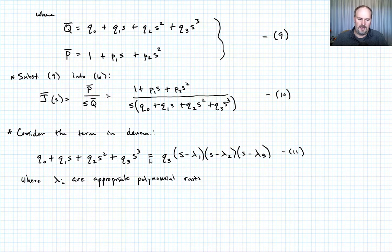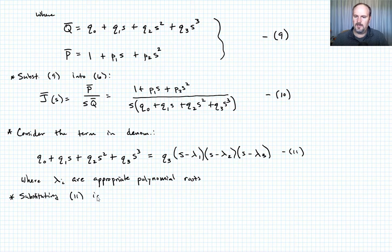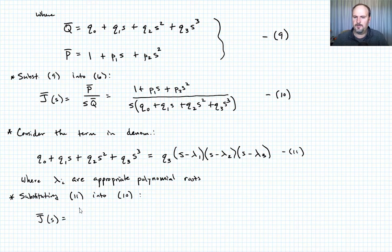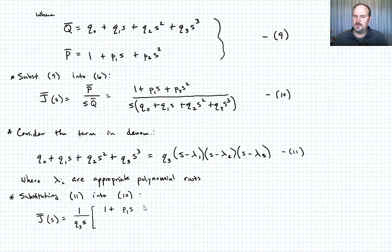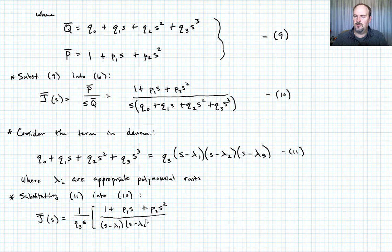Substituting equation eleven into equation ten, we can write J bar as a function of S equals one over Q3 S, times the quantity 1 plus P1 S plus P2 S squared, divided by S minus lambda one, times S minus lambda two, times S minus lambda three. Let's call that equation twelve.